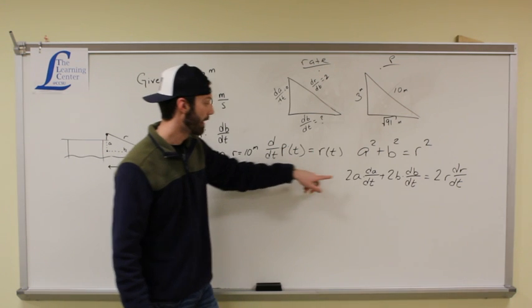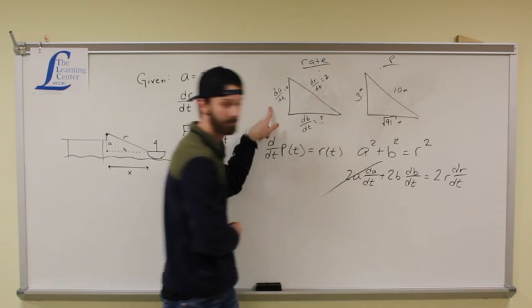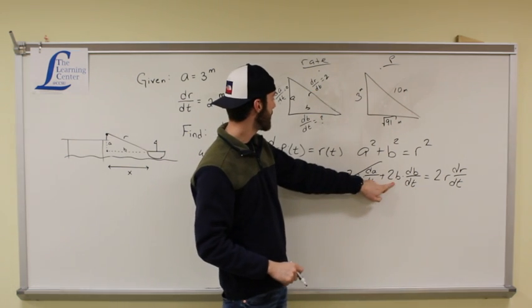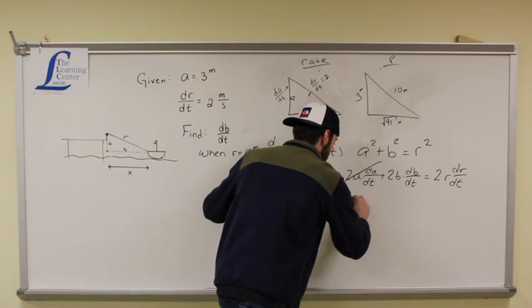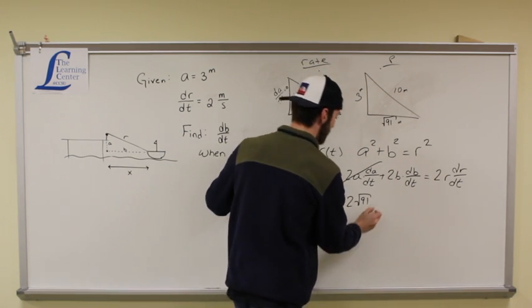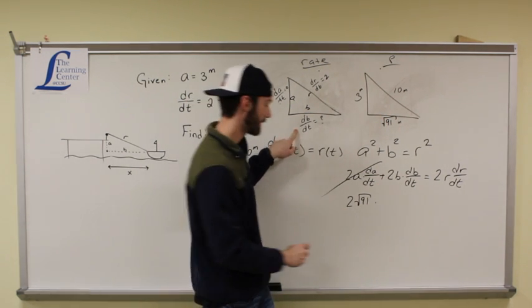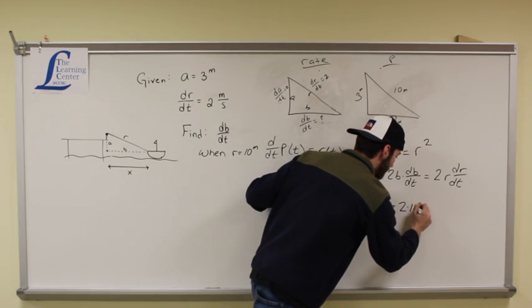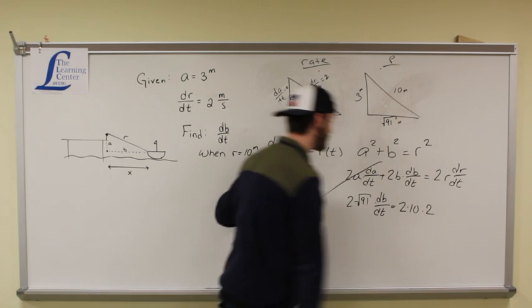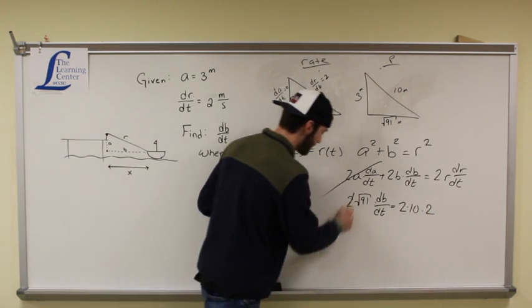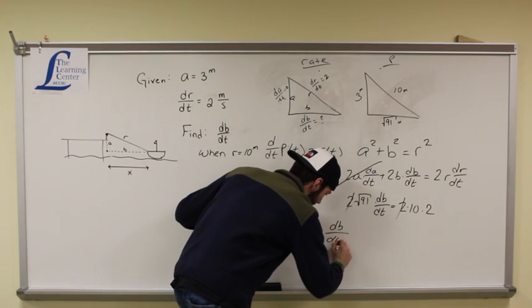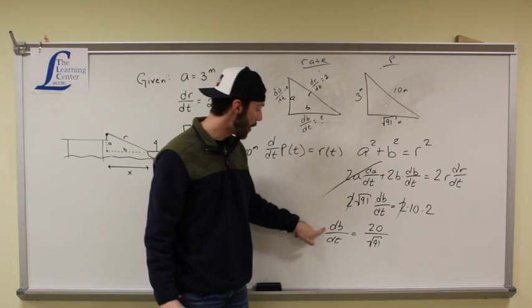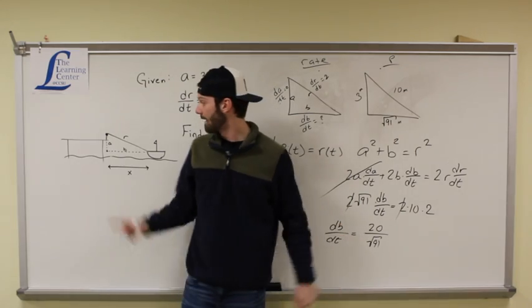So now what we can do is we can just plug in the information we have. We know dA/dt is zero. So this whole thing is going to go away. And we know that B is, we go find, let's label these sides. A, B, R. We know that B is going to be square root of 91. So we get 2 root 91 times db/dt, which we said was, we don't know, we're just going to leave it db/dt, is equal to 2 times R, and what's R? 10. Times what's dr/dt? 2. And now you just do some algebra to solve for db/dt. Divide by two both sides, that cancels with that guy, and we're left with db/dt is equal to 20 divided by square root of 91. So how fast the boat is moving in is whatever approximate decimal you get for this guy. That's how fast we're moving that way.